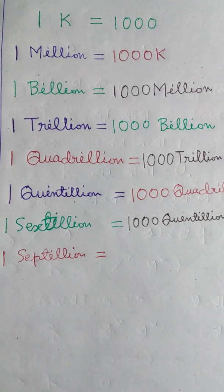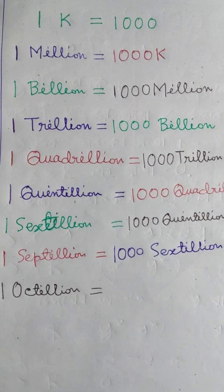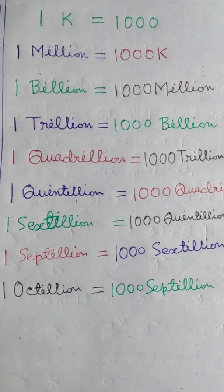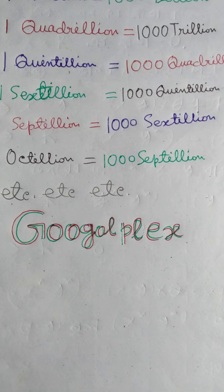One Septillion is equal to 1000 Sextillion. One Octillion is equal to 1000 Septillion, and so on. By the way, do you know what is the value of the number called Googleplex? Let me know in the comment section. Thank you.